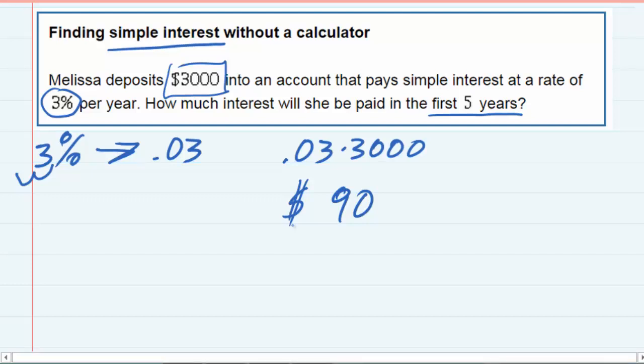Simple interest would be the same calculation for the second year, for the third, and so on. Since we're looking at five years, we can take that interest for the first year and multiply by five, and we would get $450 in interest. So she would make $450 in interest over the first five years.